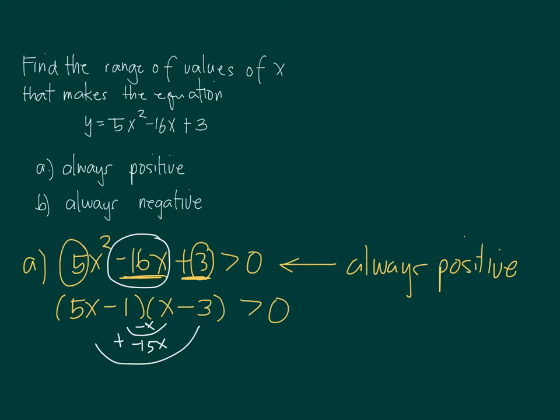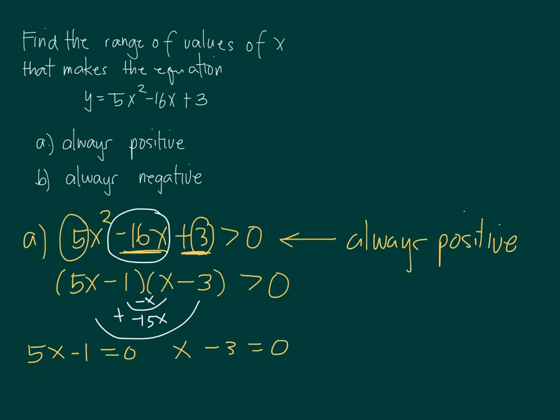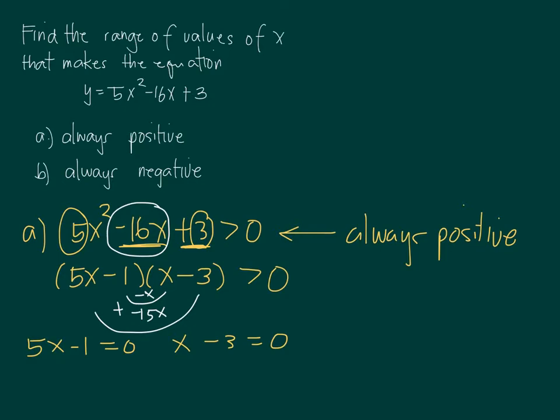Once you found the factors, you can identify now the numbers where it will be 0, and that is by simply getting each factor equated to 0. So minus 3 equal to 0. When you solve this, we have x equals 1 fifth, and then the other one is x equals 3.